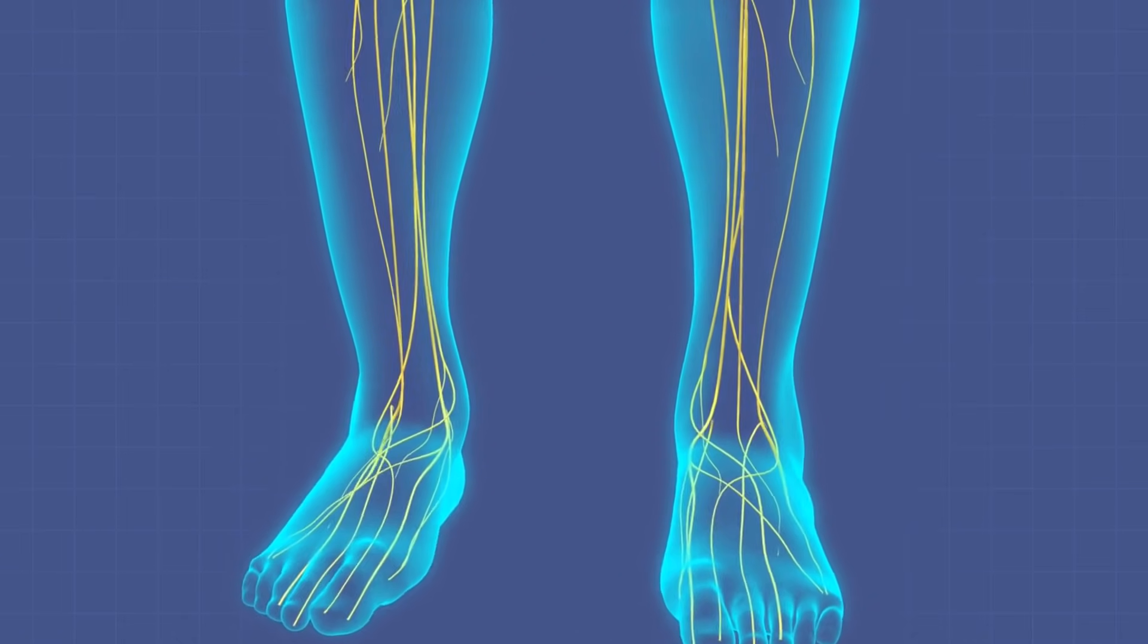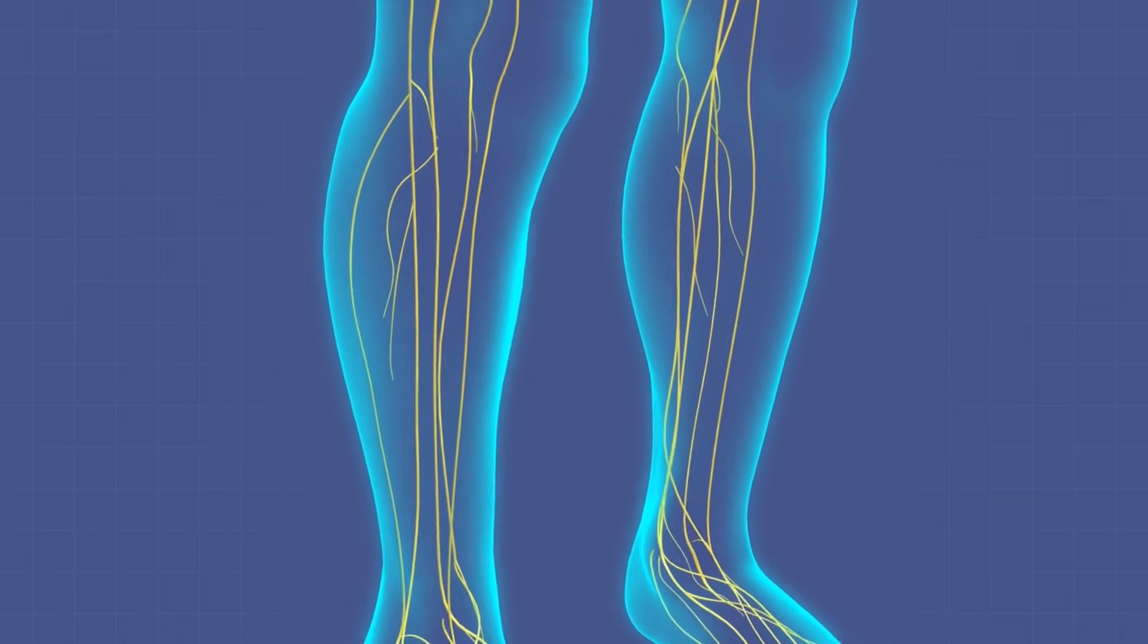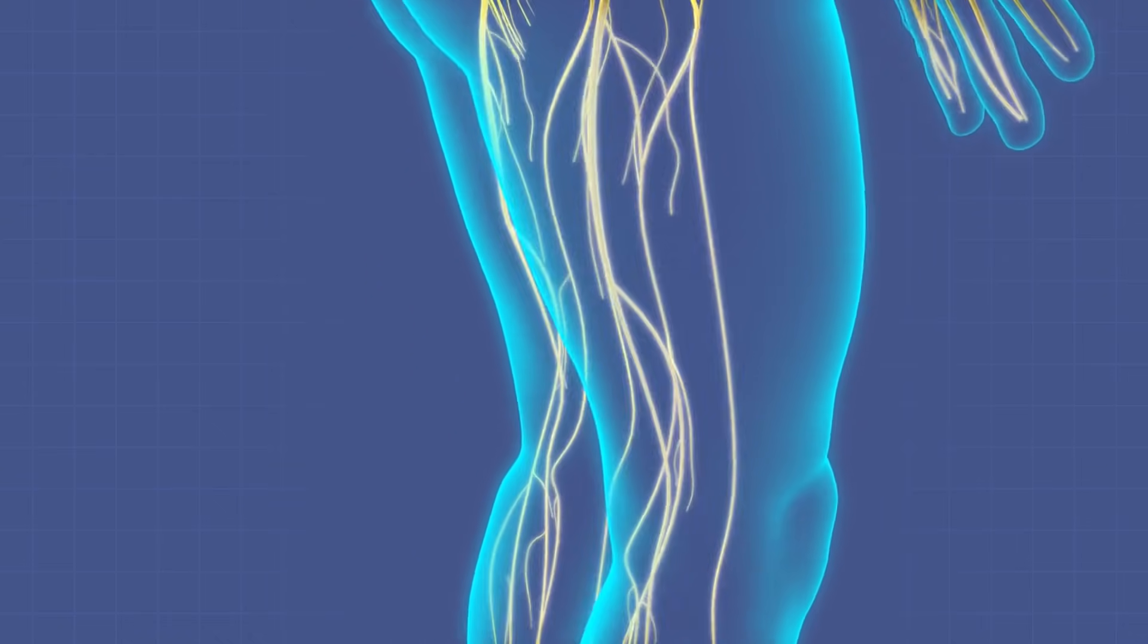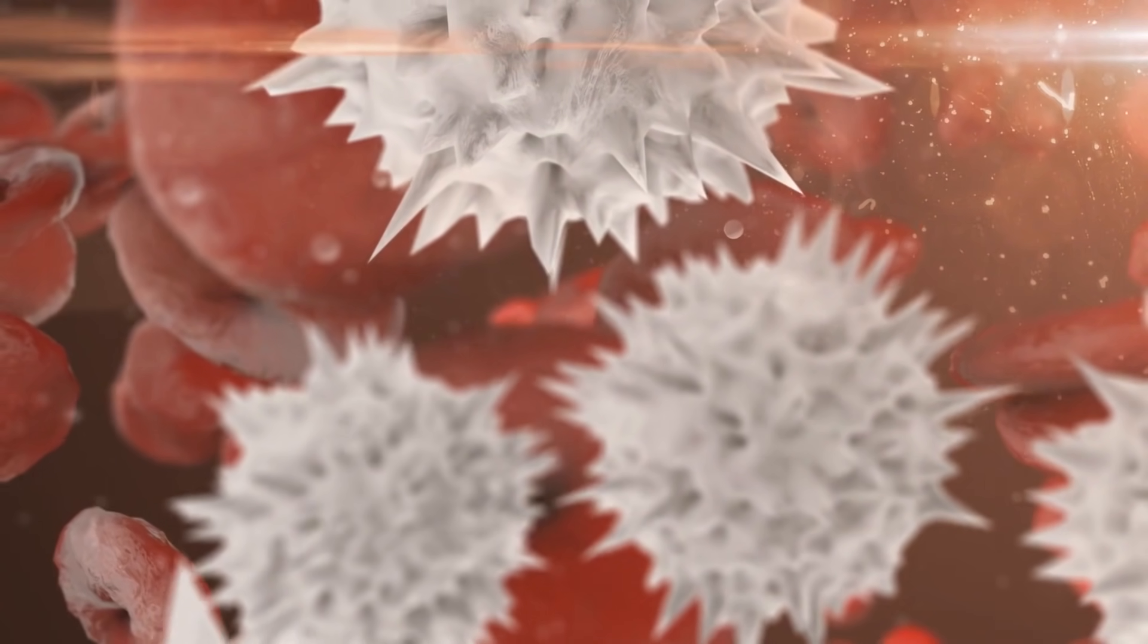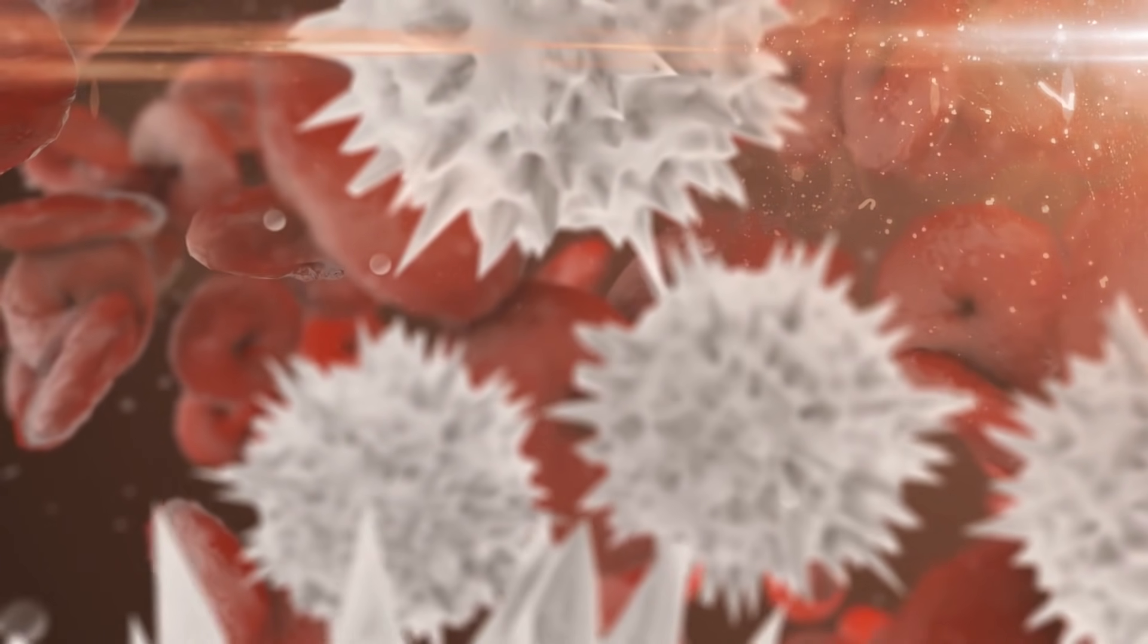Mutations may alter the original structures targeted by antibodies, rendering them useless. The solution is giving the immune system more potential targets, not just the spike protein.